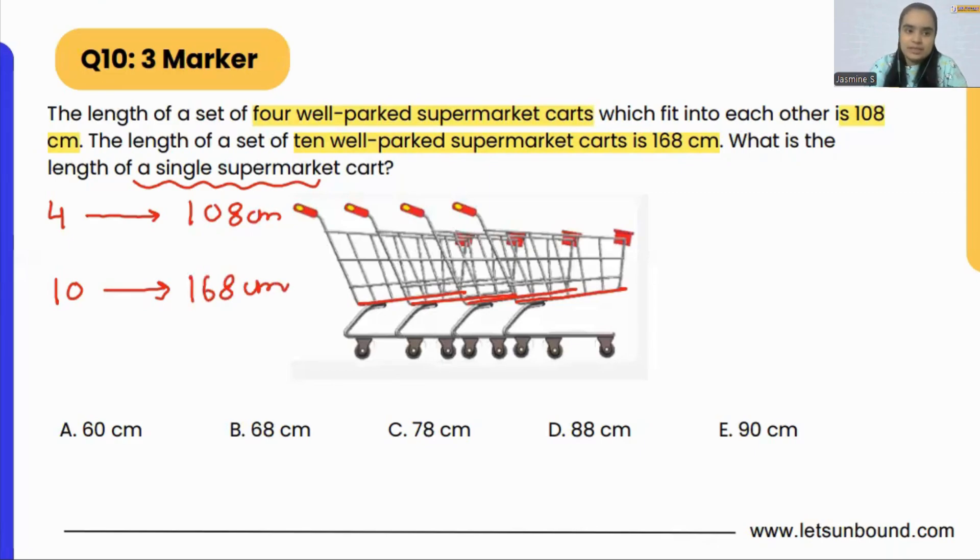Now from here, if you will see, we can't simply divide and we cannot find our answer because there is some part which is overlapping of each super cart. We have to figure out that part, what we have to add in each and every supermarket cart to find out the length of set. Now, if you will see here, 4 is having 108 cm and 10 supermarket carts is having the length of 168 cm.